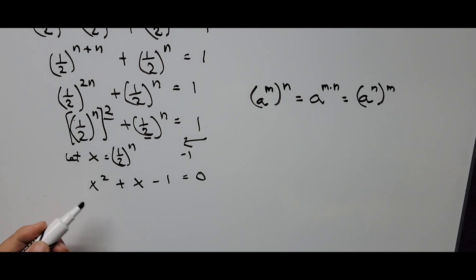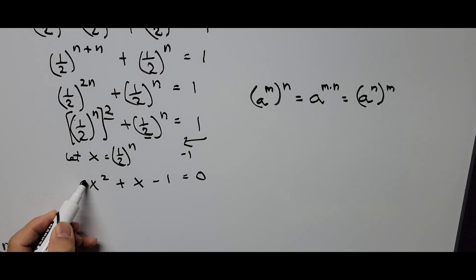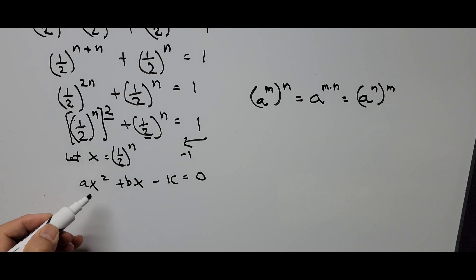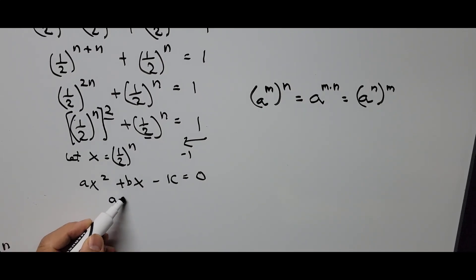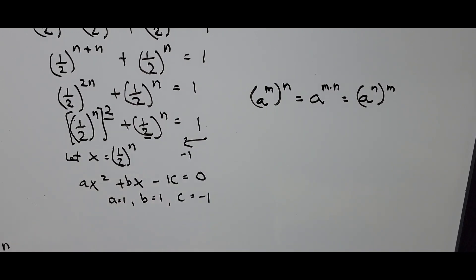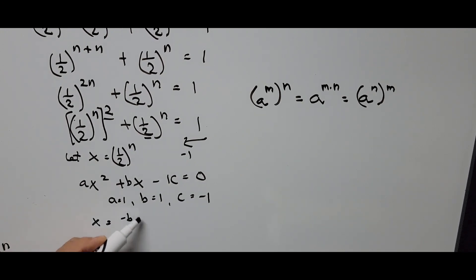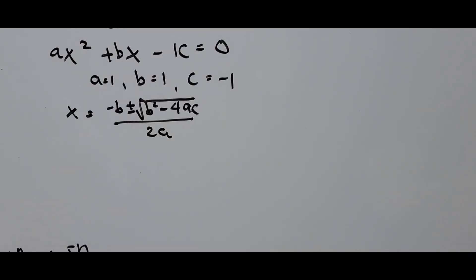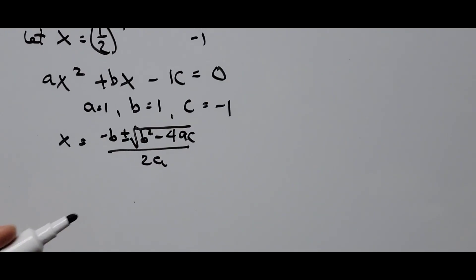We can now use the quadratic formula to find the value of x. The equation x² + x − 1 = 0 is in standard form ax² + bx + c = 0, with coefficients a = 1, b = 1, and c = −1. Substituting into the quadratic formula x = (−b ± √(b² − 4ac)) / 2a.